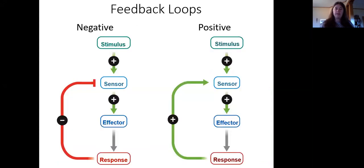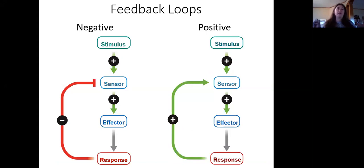Basically, both of these types of feedback loops involve some sort of stimulus. In the case of negative feedback loops, that stimulus is a departure from the set point. In the case of positive feedback loops, there's not really a set point per se, but there's a starting stimulus that sets off the positive feedback loop.